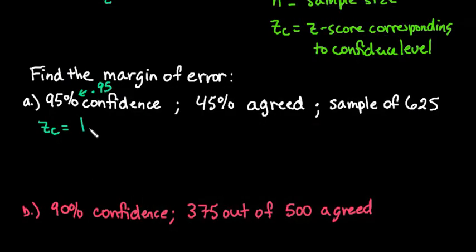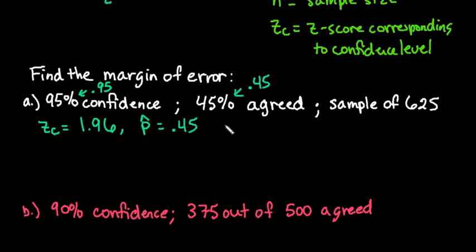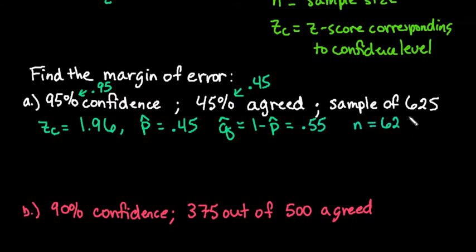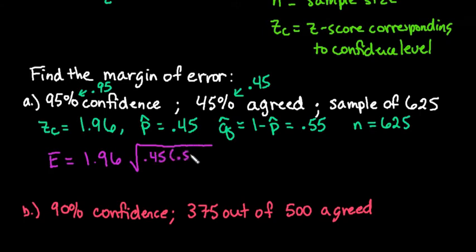So our z_c is 1.96. Our p-hat is 0.45 — we always write this as a decimal, dividing the percentage by 100. To find q-hat we do 1 minus p-hat, giving us 0.55. Our sample size n is 625. So we plug in: E equals 1.96 times the square root of 0.45 times 0.55 divided by 625.